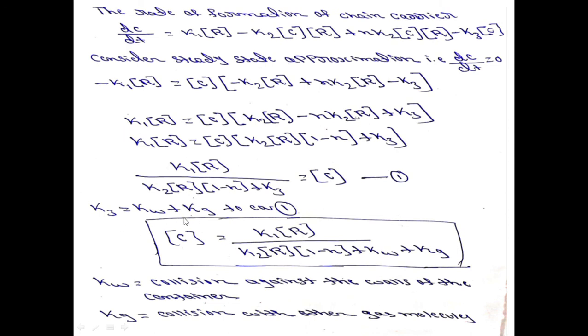For k3, substitute kW plus kG into Equation Number 1. Then the equation becomes: C is equal to k1·R divided by k2·R·(1 minus N) plus kW plus kG. This is the equation for the kinetics of the branching chain reaction.